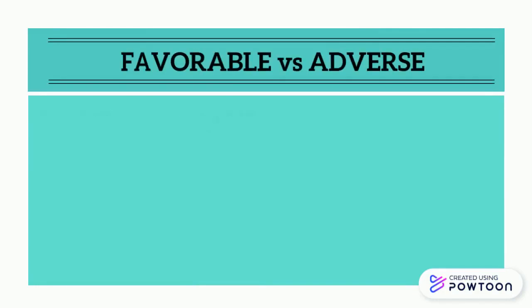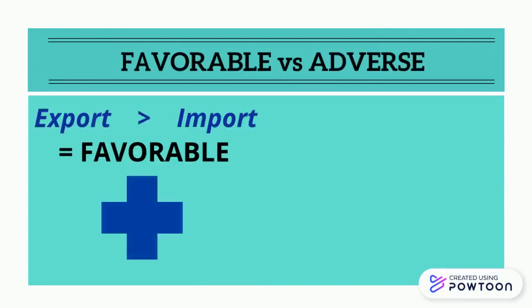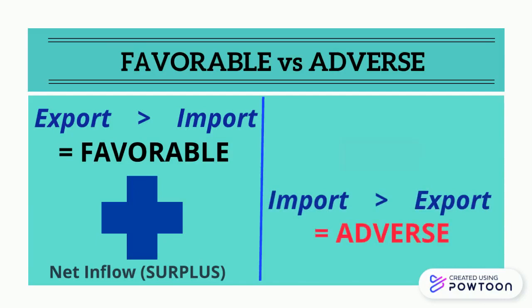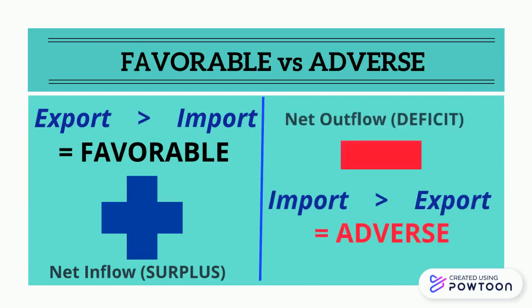Now, our balance of trade or payments can be favorable or adverse. If it's favorable, our exports exceeded our imports and it resulted in a surplus. If it's adverse, our imports exceeded our exports and it resulted in a deficit.